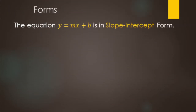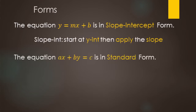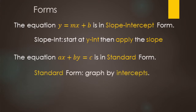Quick review on equation forms so we can identify them for graphing. When we have y = mx + b, that is slope-intercept form — for graphing, start with the y-intercept then apply the slope. If you have x, then y, then the equal sign, that's standard form, and we graph those using the x and y intercepts.